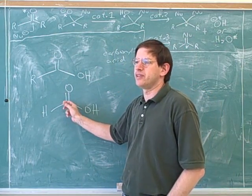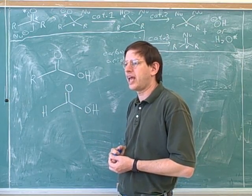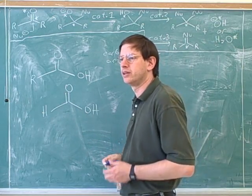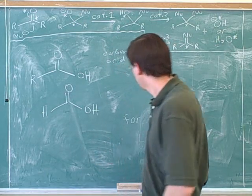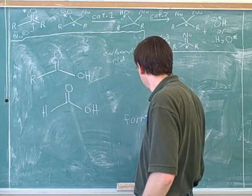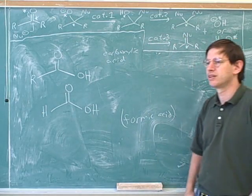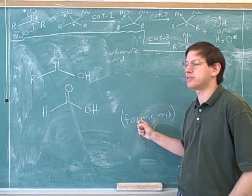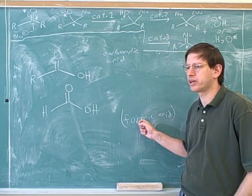So what would be a good name for this? Just do a little brief nomenclature. Well, how many carbons does this have? One. And what's the root for one carbon? Form. That's the common root. This would be the common name for this: formic acid. Good. And this is the name that's usually used. So we saw previously that form is the common root for one carbon.